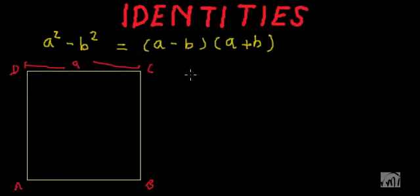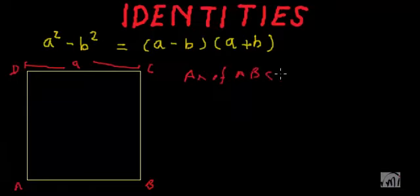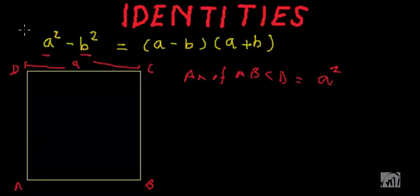What will be the area of ABCD? The area of ABCD will be equal to A². And what we are trying to find is A² - b², which means we have to remove a tiny square of size b from this square.